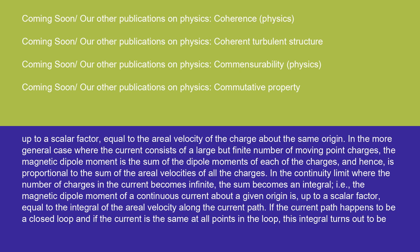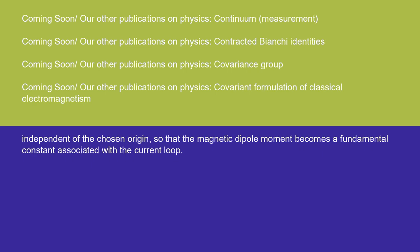If the current path happens to be a closed loop, and if the current is the same at all points in the loop, this integral turns out to be independent of the chosen origin, so that the magnetic dipole moment becomes a fundamental constant associated with the current loop.